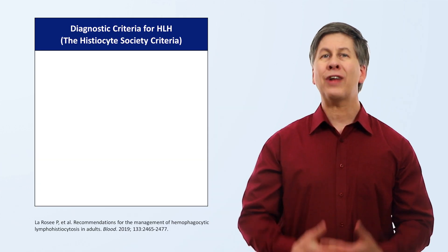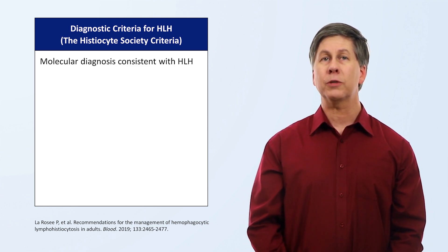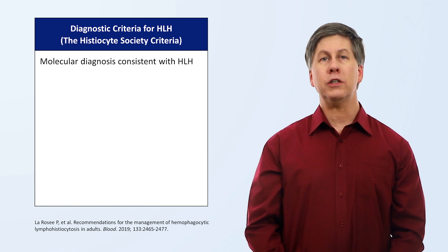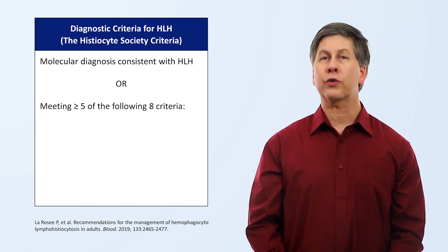Regarding how clinicians can make a diagnosis of HLH, there are many different proposed sets of diagnostic criteria, but the most commonly used is the histiocyte society criteria. It allows the diagnosis to be made if the patient has a molecular diagnosis consistent with HLH, in other words, if they have a mutation known to cause the disease, or if the patient meets at least five of eight clinical criteria.